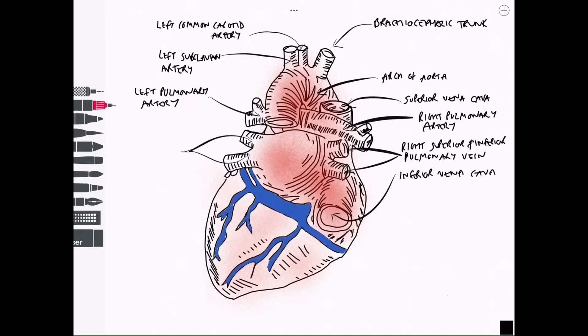Over to the left hand side we have similar structures. Let's just go through those quickly: the left pulmonary artery, we can also see the left superior and inferior pulmonary veins, again leading into that very large left atrium which is best seen from this posterior view. We can't really see it at all from an anterior view.